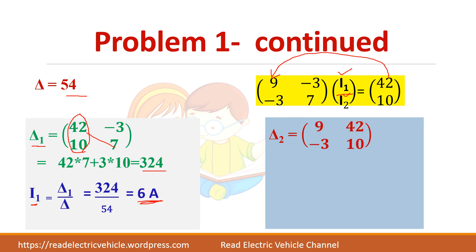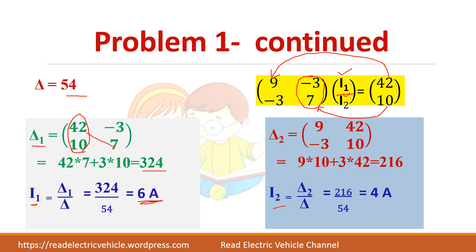To find Δ2, take the same matrix but replace the second column with the right-hand side values, so the second column becomes 42 and 10. Find the determinant, and I2 = Δ2 / Δ, which gives 4 amps. You can verify the answer since we already solved these equations: I1 = 6 amps, I2 = 4 amps, and the current through the 3-ohm resistor is 2 amps.